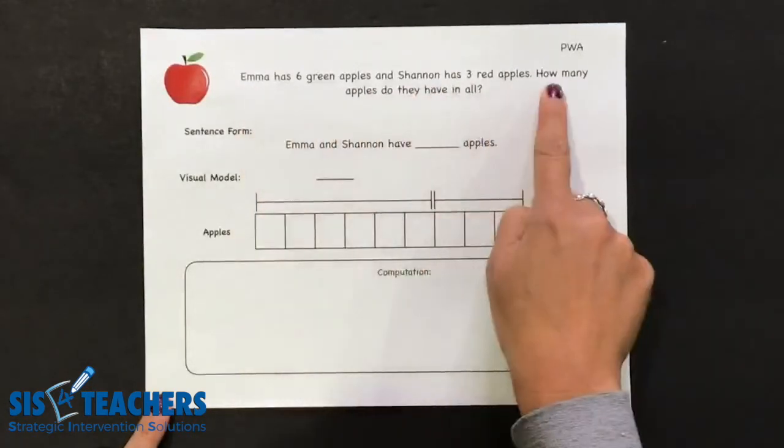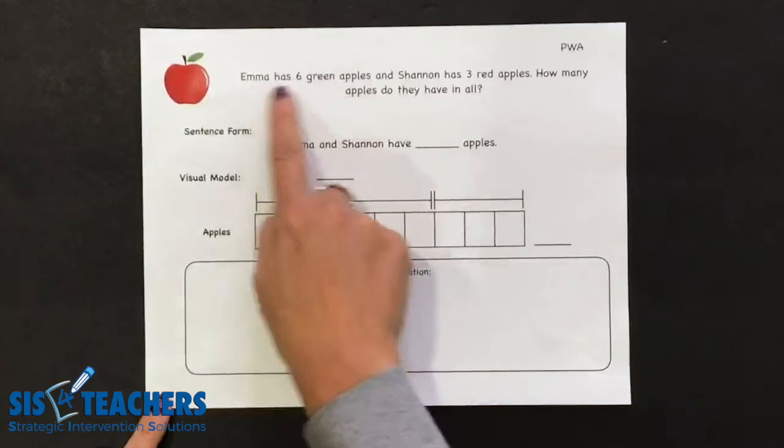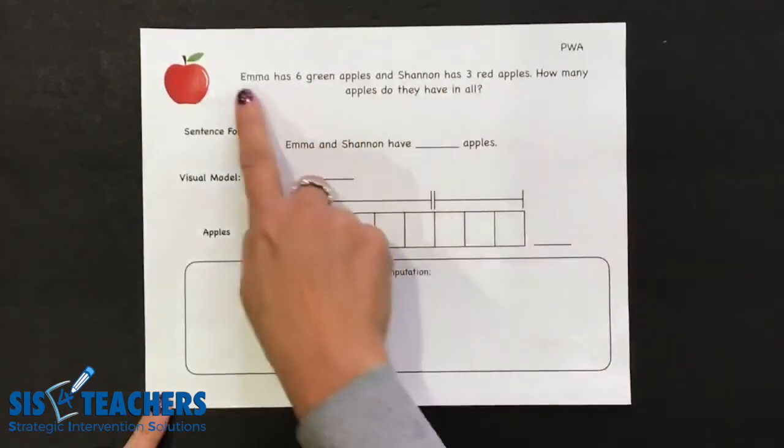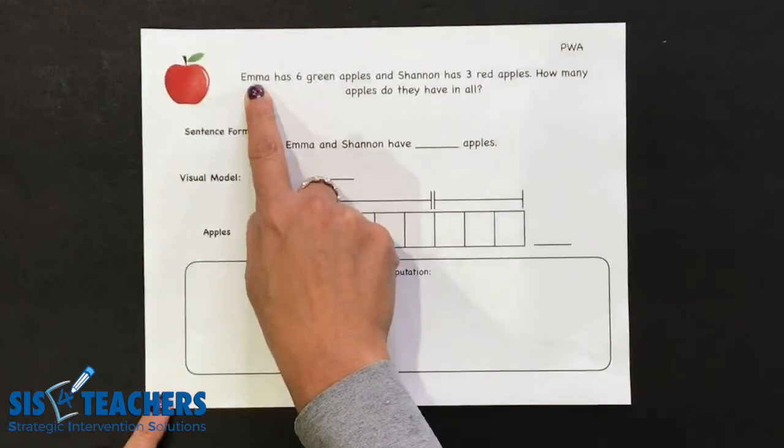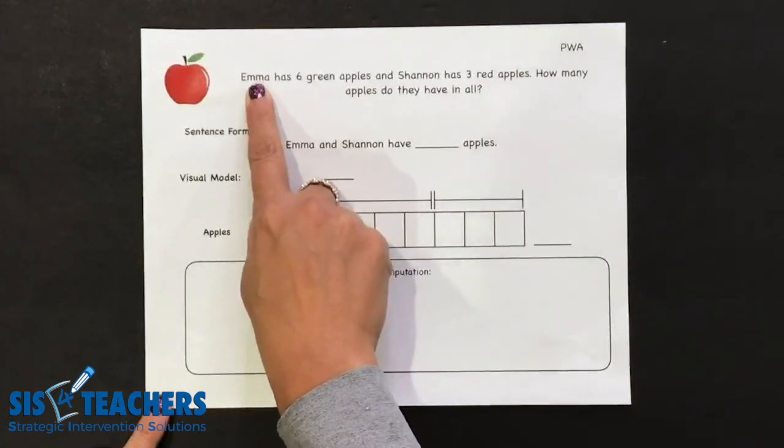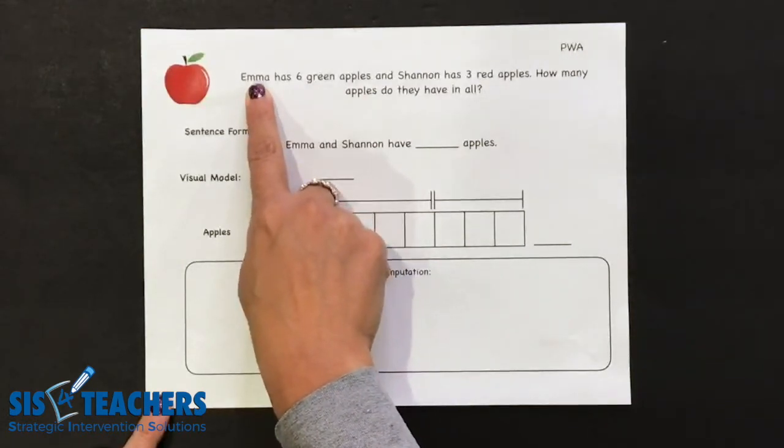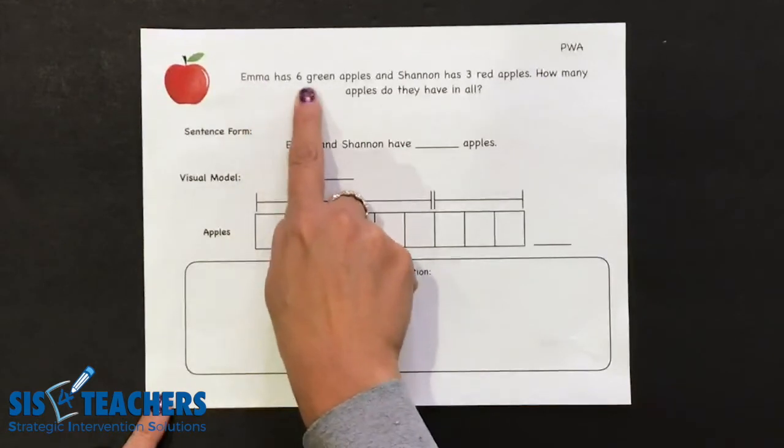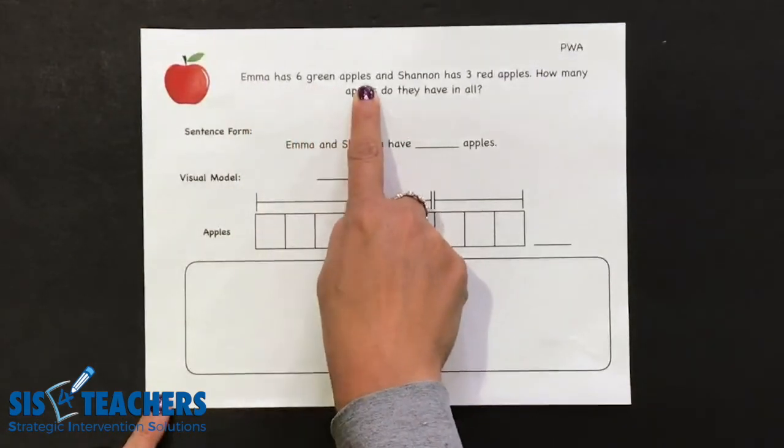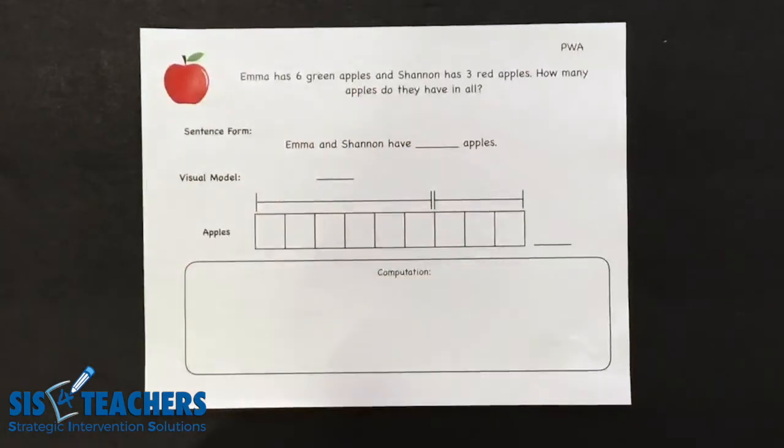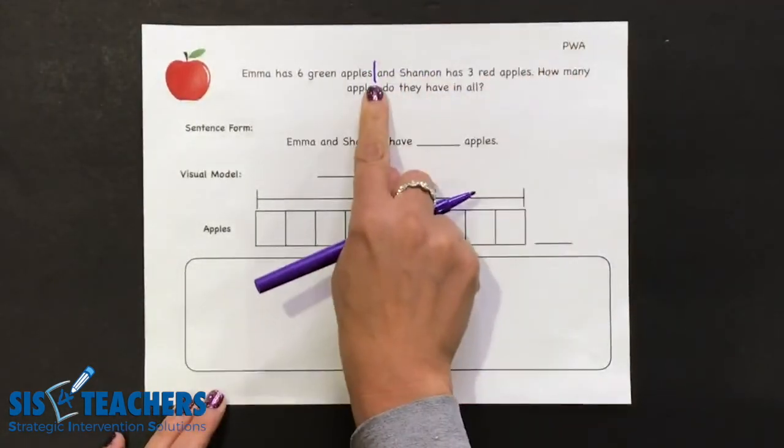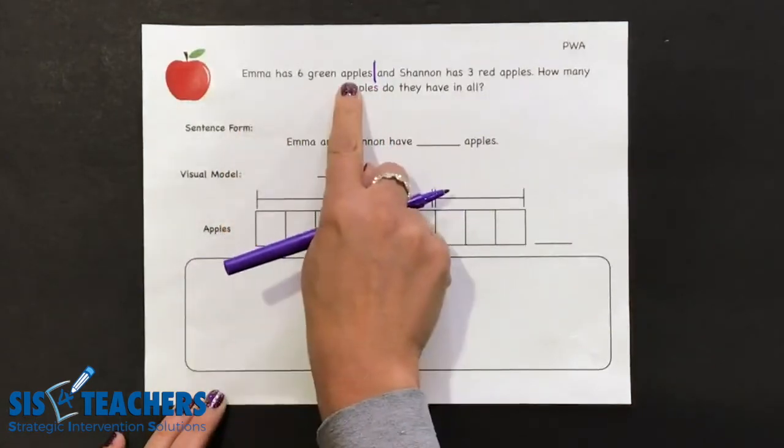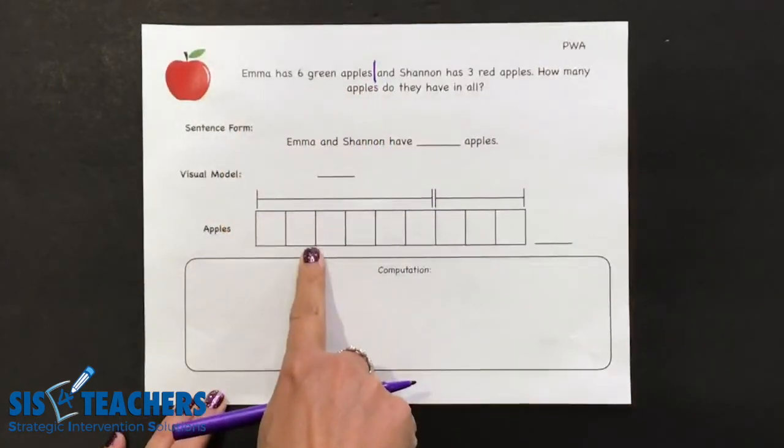So we've read it once through. Students can read it if they're able, or you can read it and go back in chunks. You start reading and kids will get good at telling you when to stop because they've heard new mathematical information. Emma has six green apples. We'll have the kids repeat that and put in what we call a chunk, a line showing there's a new piece of information.